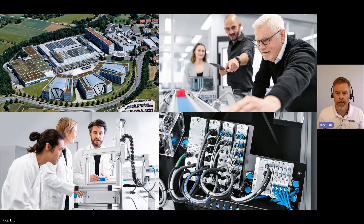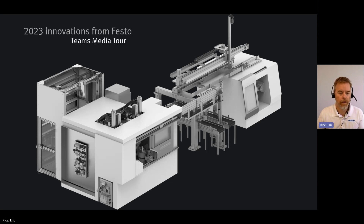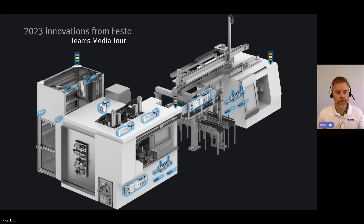I'd like to start off by showing you a few key technical benefits of the Festo automation platform, and the best way to do that is with some diagrams. What I've got here on this slide is a representation of a typical machine on a manufacturing floor. Within that machine, there are going to be any number of automation devices and components, which we can roughly group into field devices like sensors and actuators, and then controls.